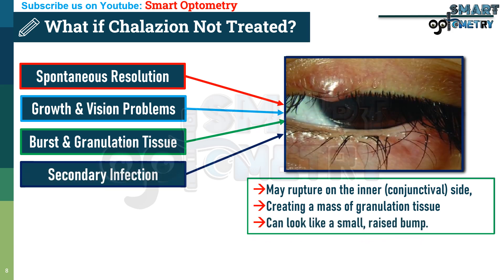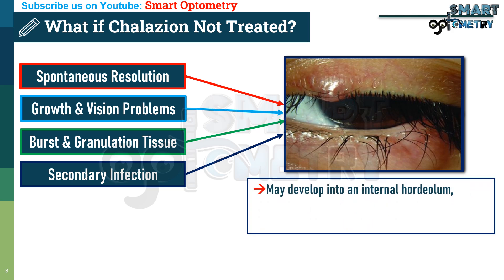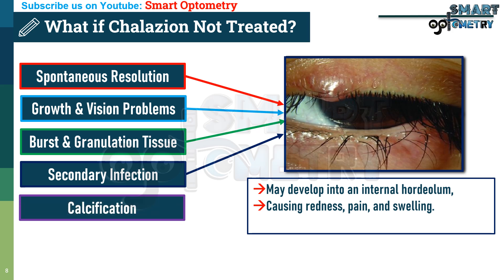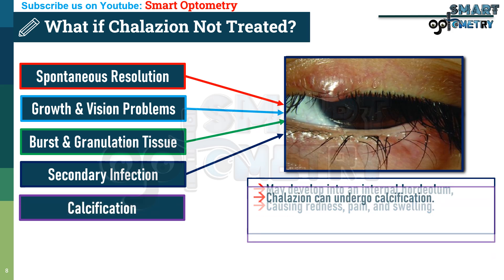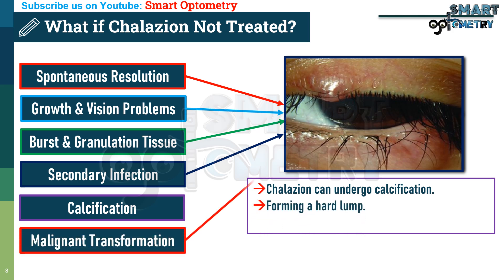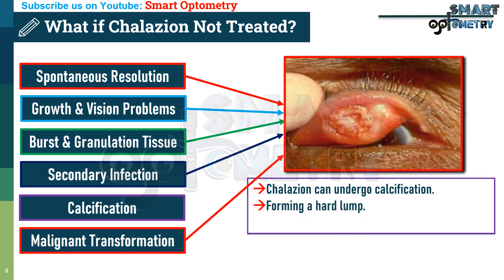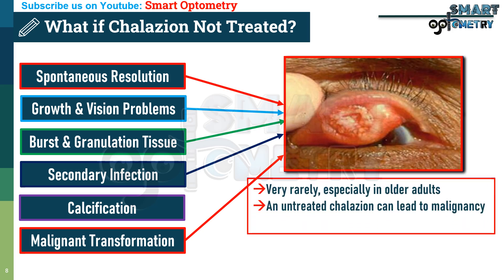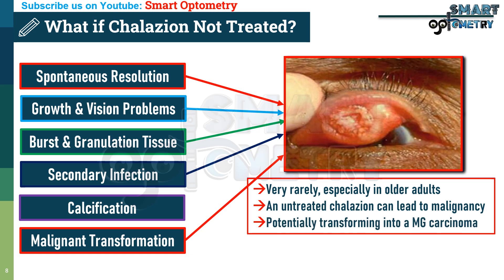Fourth, secondary infection: if infected, an untreated chalazion may develop into an internal hordeolum, causing redness, pain, and swelling. Fifth, calcification: in rare cases, a chronic chalazion can undergo calcification, forming a hard lump. Sixth, malignant transformation: very rarely, especially in older adults, an untreated chalazion can lead to malignancy, potentially transforming into a meibomian gland carcinoma.